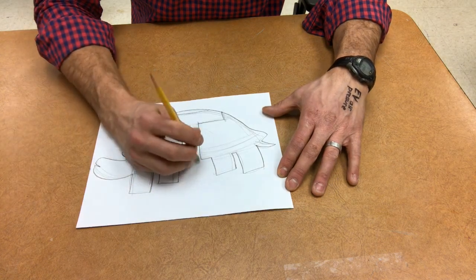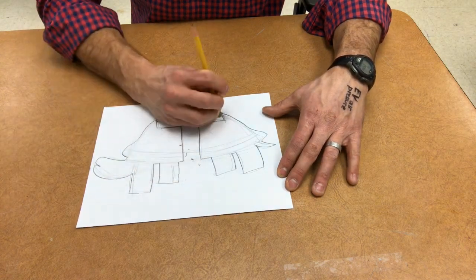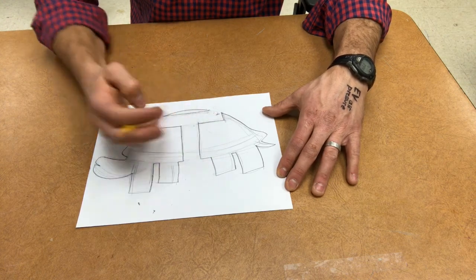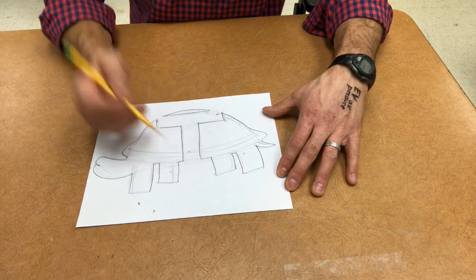Now it's important that you have the letters bleed to the edge and make sure that the letters are bold. Bold means that they're not skinny. Bleed means that they go continuous to the edge here.